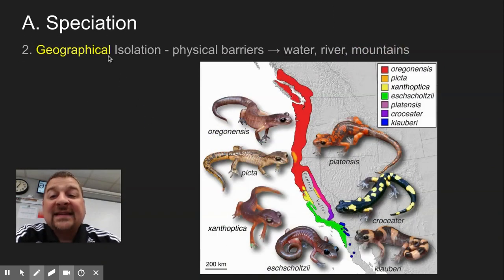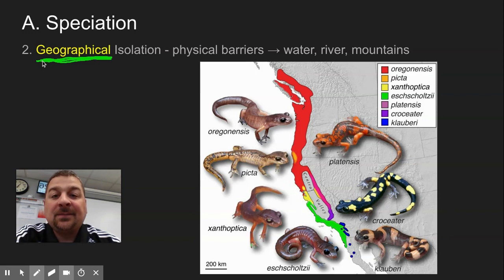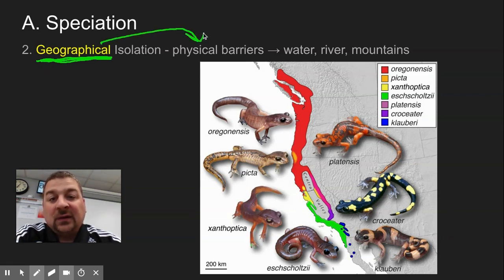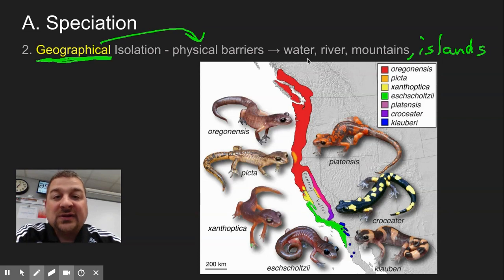The next isolating mechanism, very closely related to allopatric speciation, is geographic isolation, where a physical barrier like water, a river, mountains, or islands can actually separate creatures, and then genetic variation builds up between them.